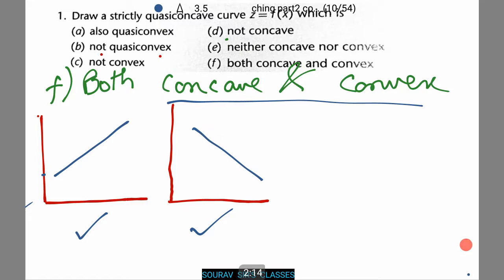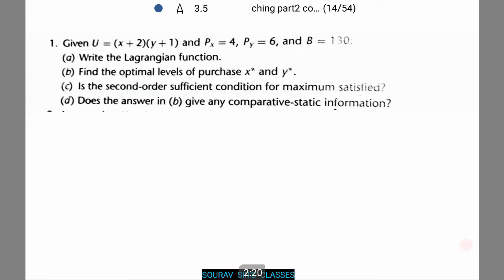Now let's do some more interesting sums. Now let's do a different kind of question. Over here we are given a utility function, the prices of two goods, and b equals 130. We need to find or write the Lagrangian function. Let's see how to do this.